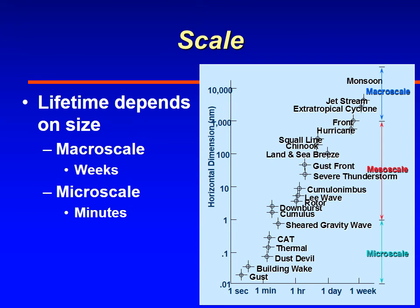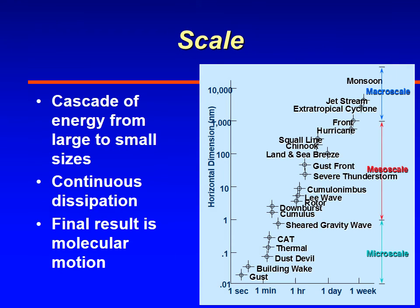Bigger things tend to last for longer periods of time. For example, a hurricane will last maybe five or six days, whereas smaller-scale eddies such as a gust or turbulence downwind of a building will only last minutes, perhaps even seconds. There's a cascade of energy from bigger sizes to smaller sizes — really big weather phenomena such as hurricanes will eventually break down into smaller eddies such as thunderstorms, which break down into even smaller eddies like thermals or gusts.